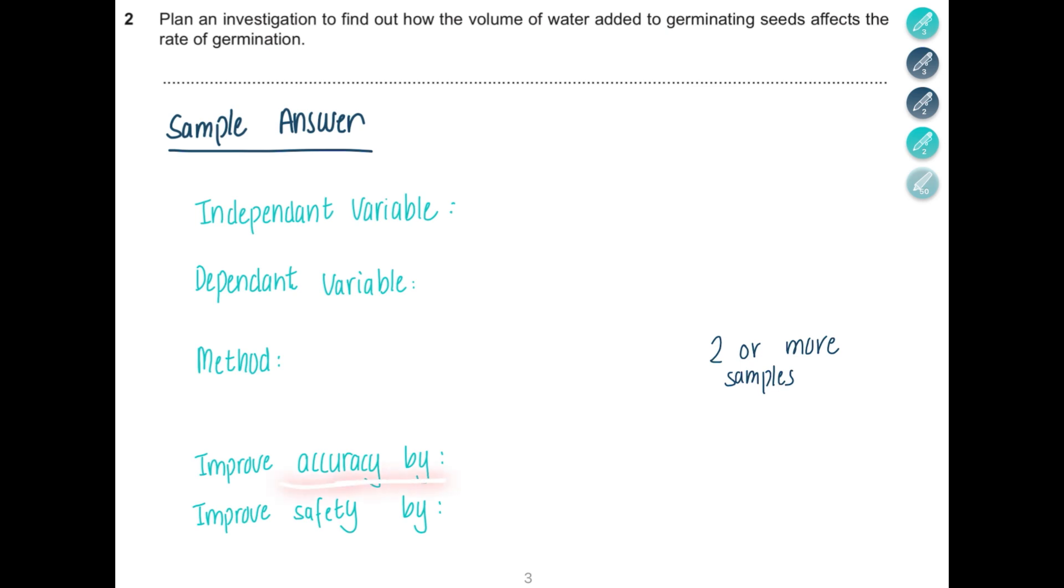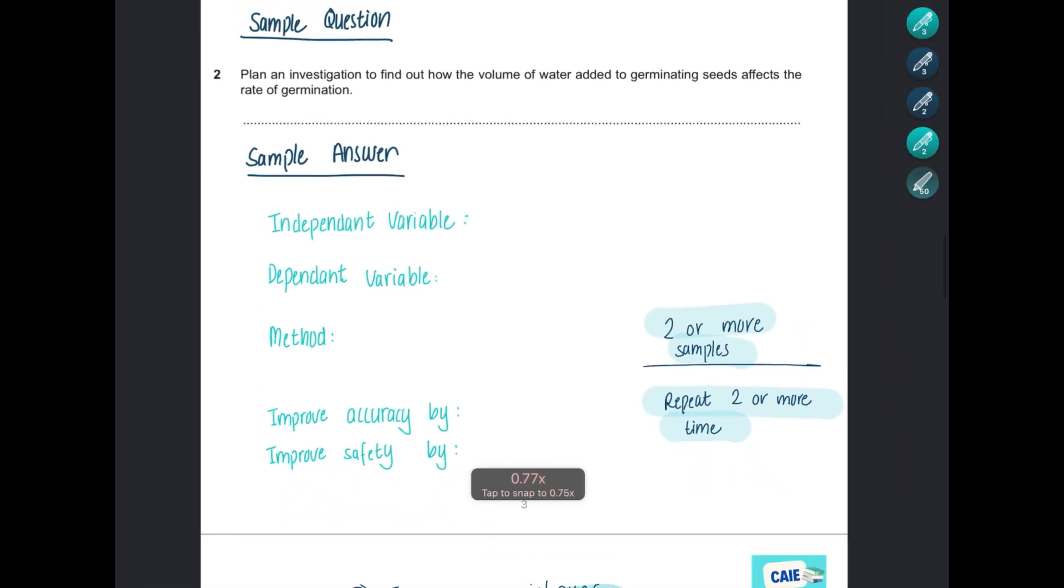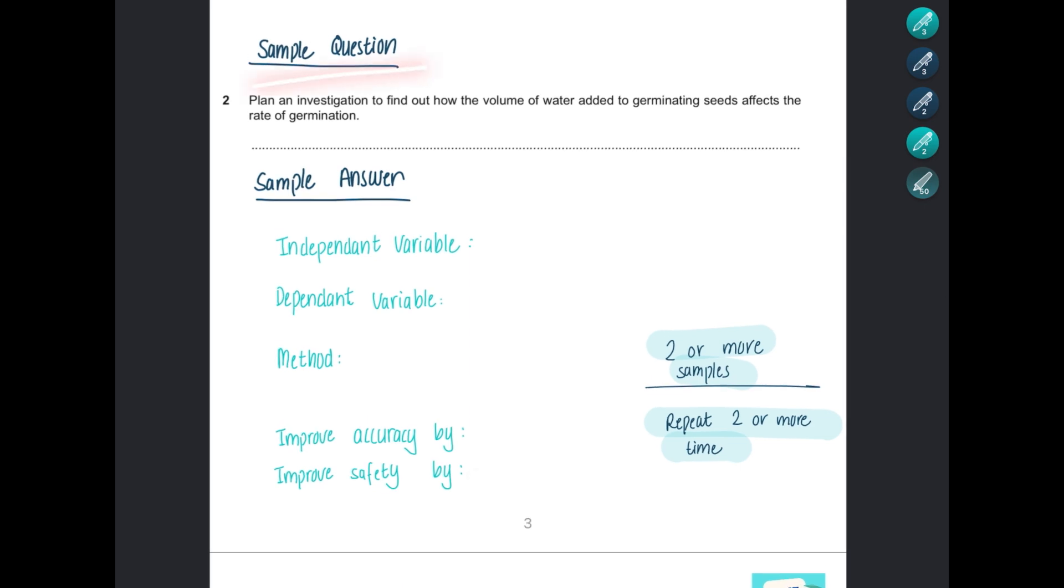To improve accuracy, you have to repeat at least two or more times. When I did the answer in ChatGPT, it said repeat one time or it just said repeat it. In our marking scheme, specifically they said we want two or more times and two or more samples—I'm talking about biology. Improve safety, and then finally you can have some methods to improve safety. Let's add this question using this prompt and see what we get.